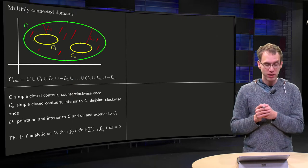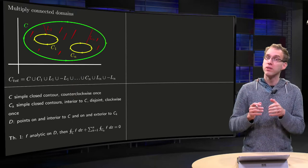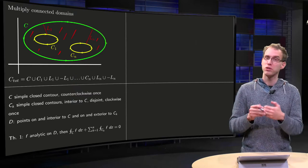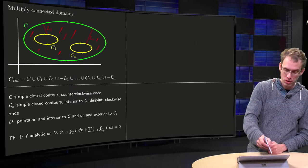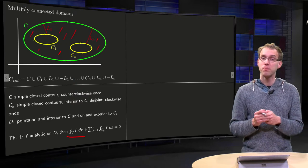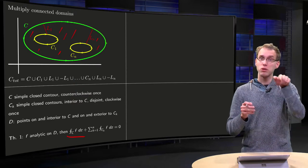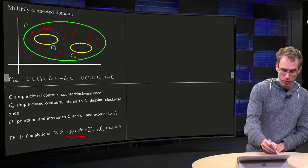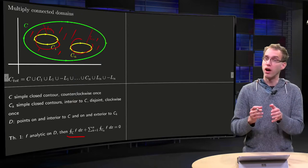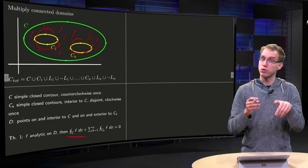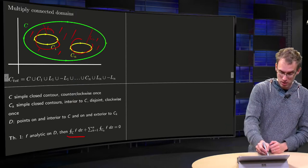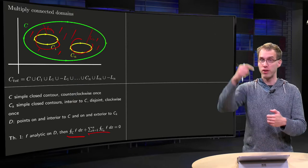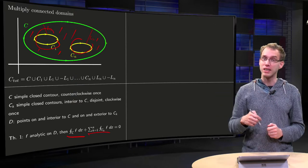Now if f is analytic on d, then we know that our total contour integral will be zero. So it will be the integral along c, going counterclockwise, plus the contributions along all the holes, where the contours are now traversed clockwise. So the sum equals zero, because the contributions of l1 and minus l1 will cancel out.